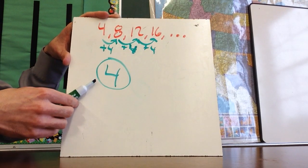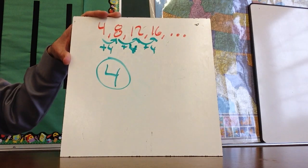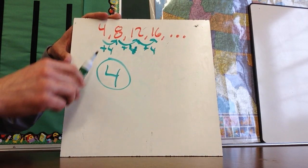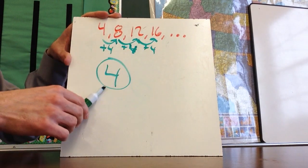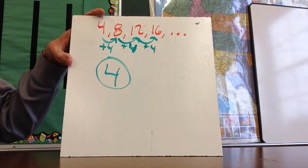When someone talks about a pattern or a sequence, we often talk about the common difference. And so in this particular example, the common difference would be four. That's going to be a really important number as we move on to figuring out equations.